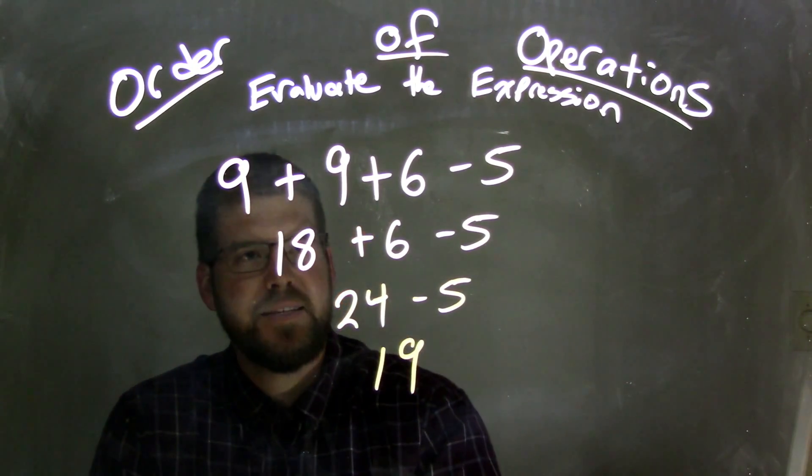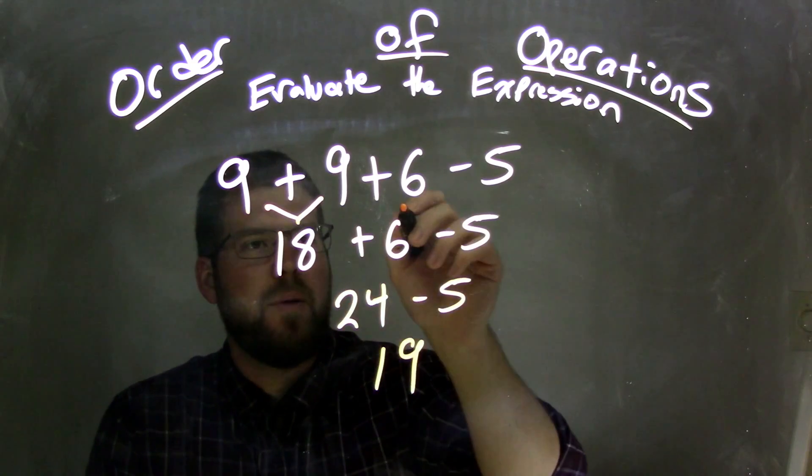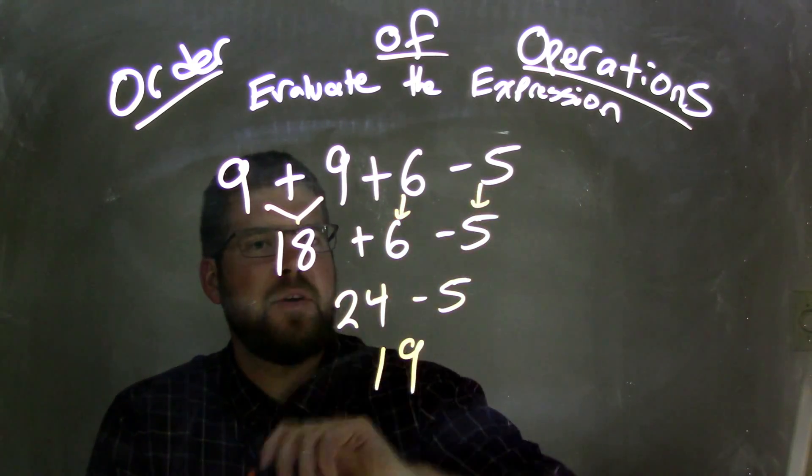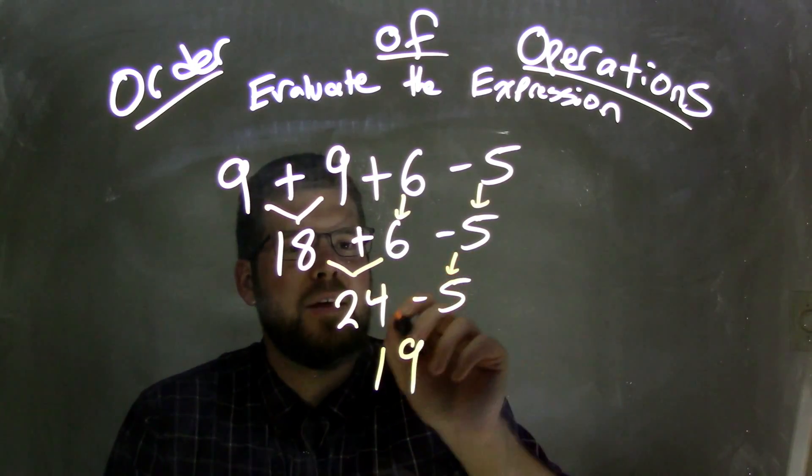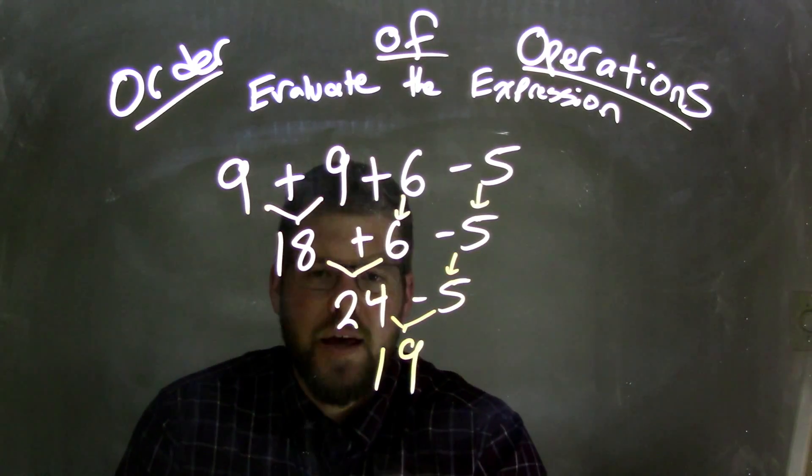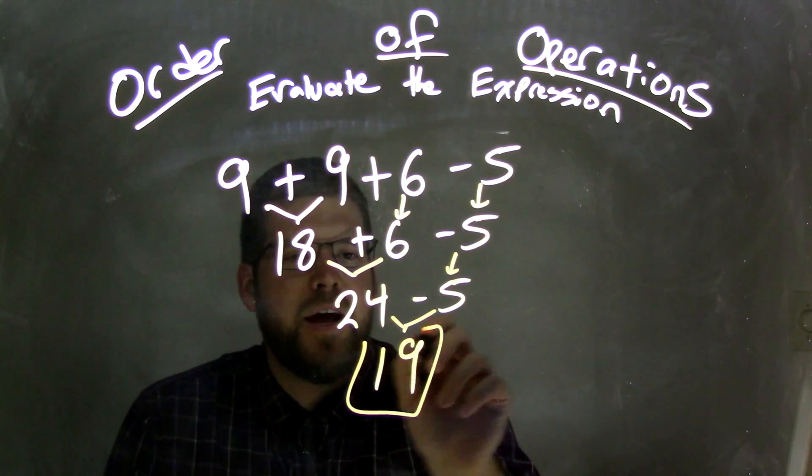So we had 9 plus 9 first was 18. We brought those together, then we brought down the 6 and the 5, then we brought together the 18 and 6, which gave us 24, brought down the 5, and lastly, brought these together to get our answer, which is 19.